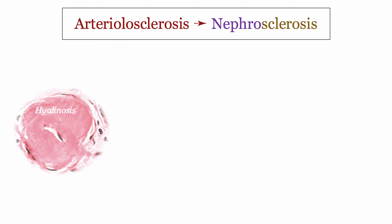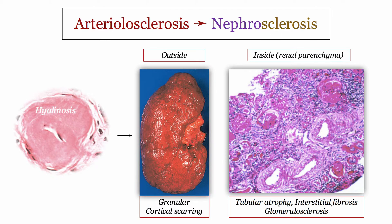That arteriolosclerosis demonstrates a tiny lumen with evidence of hyaline deposits, referred to as hyalinosis. That tiny lumen, over time, causes ischemia and scarring of the renal parenchyma.